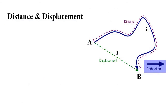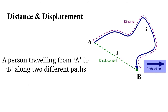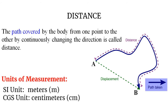Coming to the concept of distance and displacement: if a person wants to travel from point A to point B, there are many choices. Assume there are two paths — path one is a simple straight line from A to B, whereas path two is a long curve from A to B. One would prefer the straight line because it is the shortest path between A and B. We call this shortest path the displacement, and the path the body actually travels is the distance.